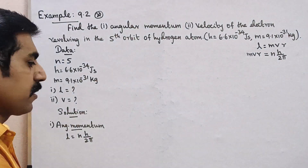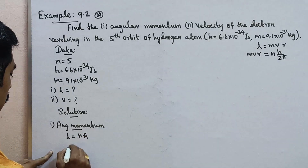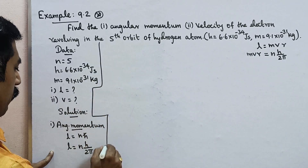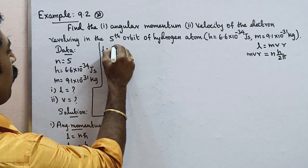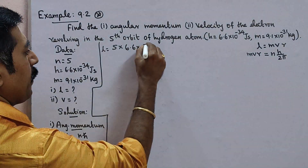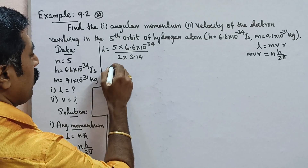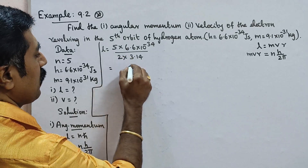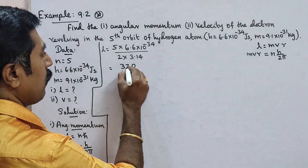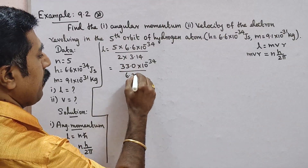Substitute: n cross H by 2π. L is equal to n (number of orbit) 5, into 6.6×10⁻³⁴, divided by 2π, that is 2 into 3.14, which equals 6.28. So we have 5×6.6×10⁻³⁴ divided by 6.28. That is 33×10⁻³⁴ divided by 6.28.